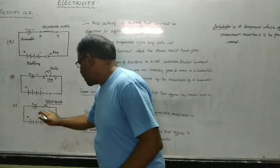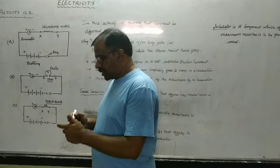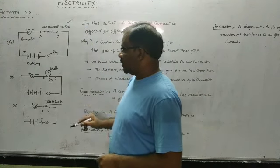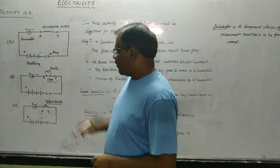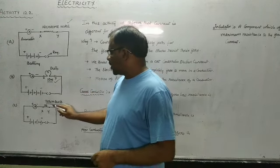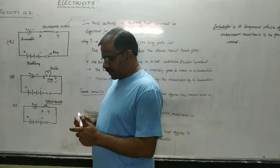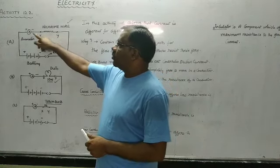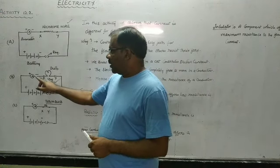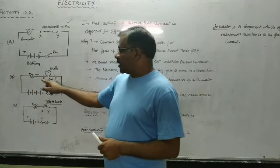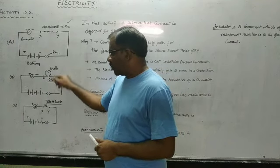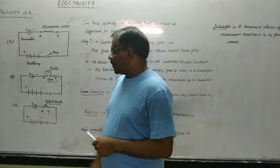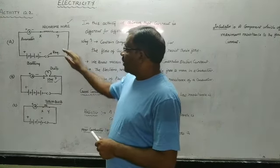This gap XY is present in all the circuits. In the first circuit we are asked to take a nichrome wire of unknown resistance. In the second circuit we have a 10-watt bulb, and in the third circuit we are asked to take a torch bulb. We are then asked to find the amount of current that flows through the ammeter in each case.